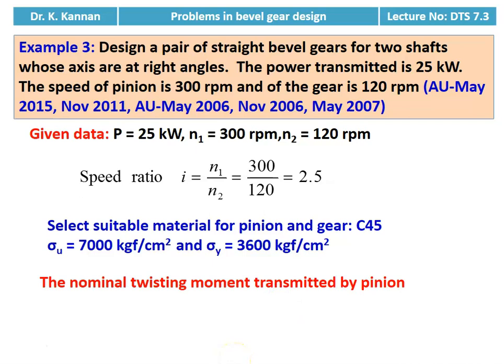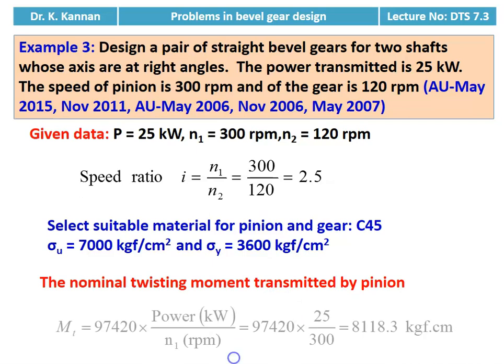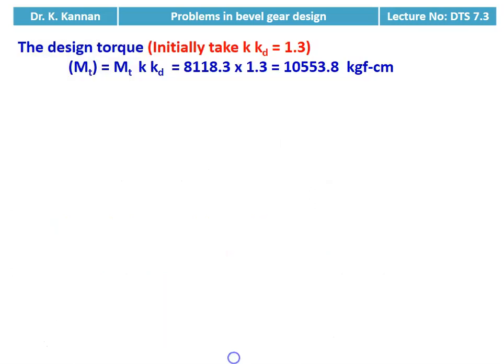We calculate the nominal twisting moment transmitted by the pinion as MT = 1.5 × ... The result is MT = 100553.8 kilogram force centimeter.